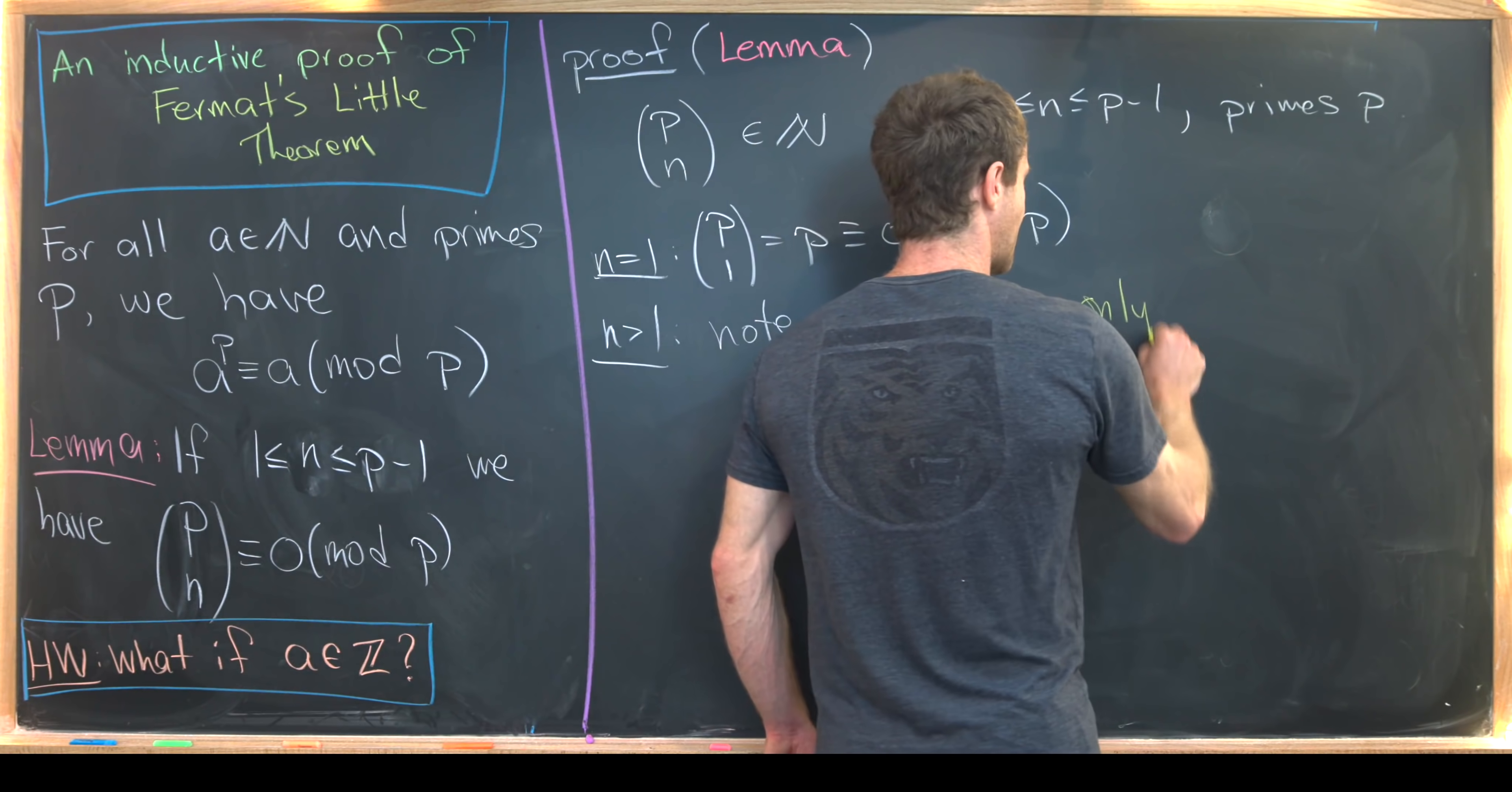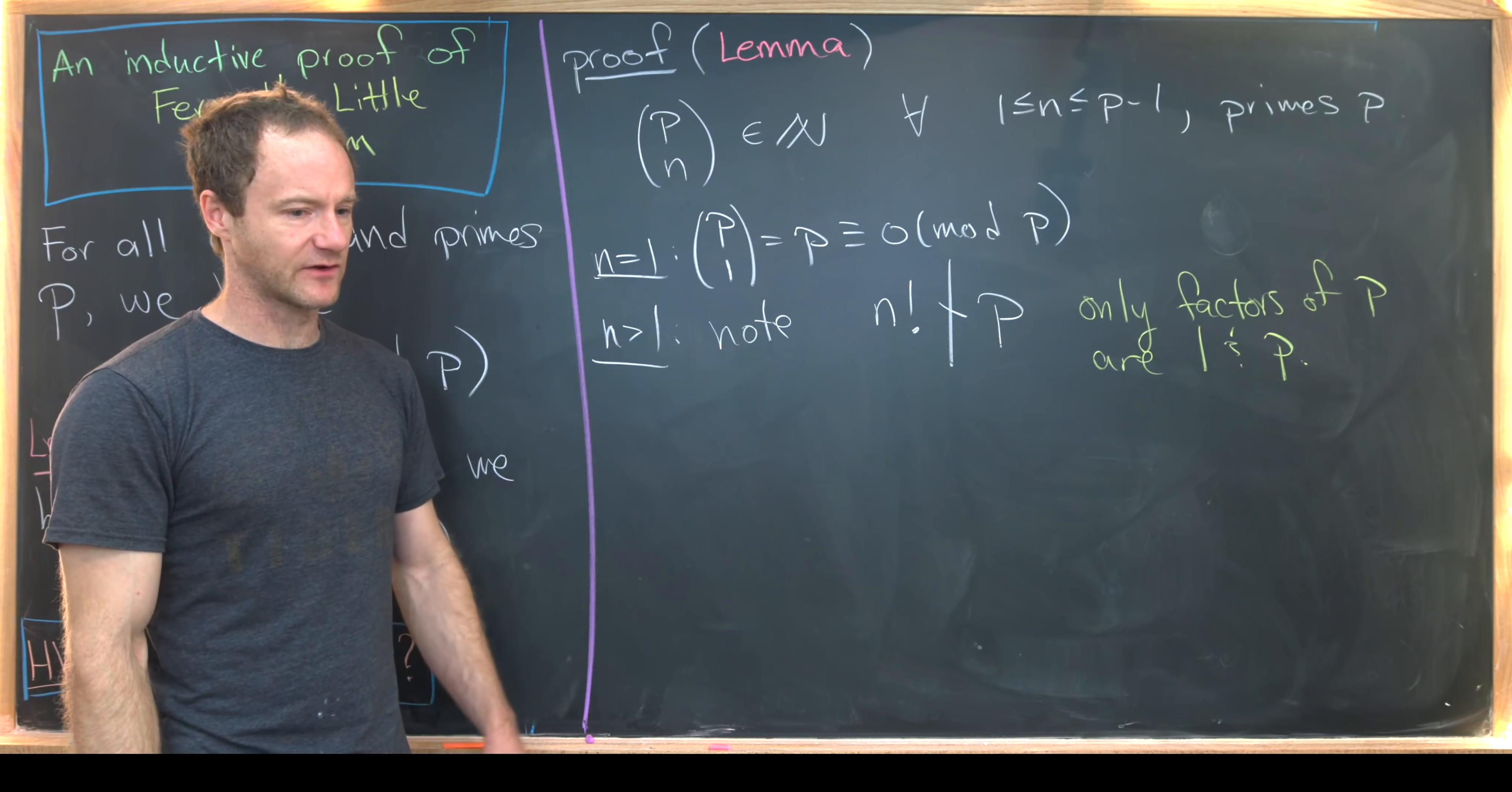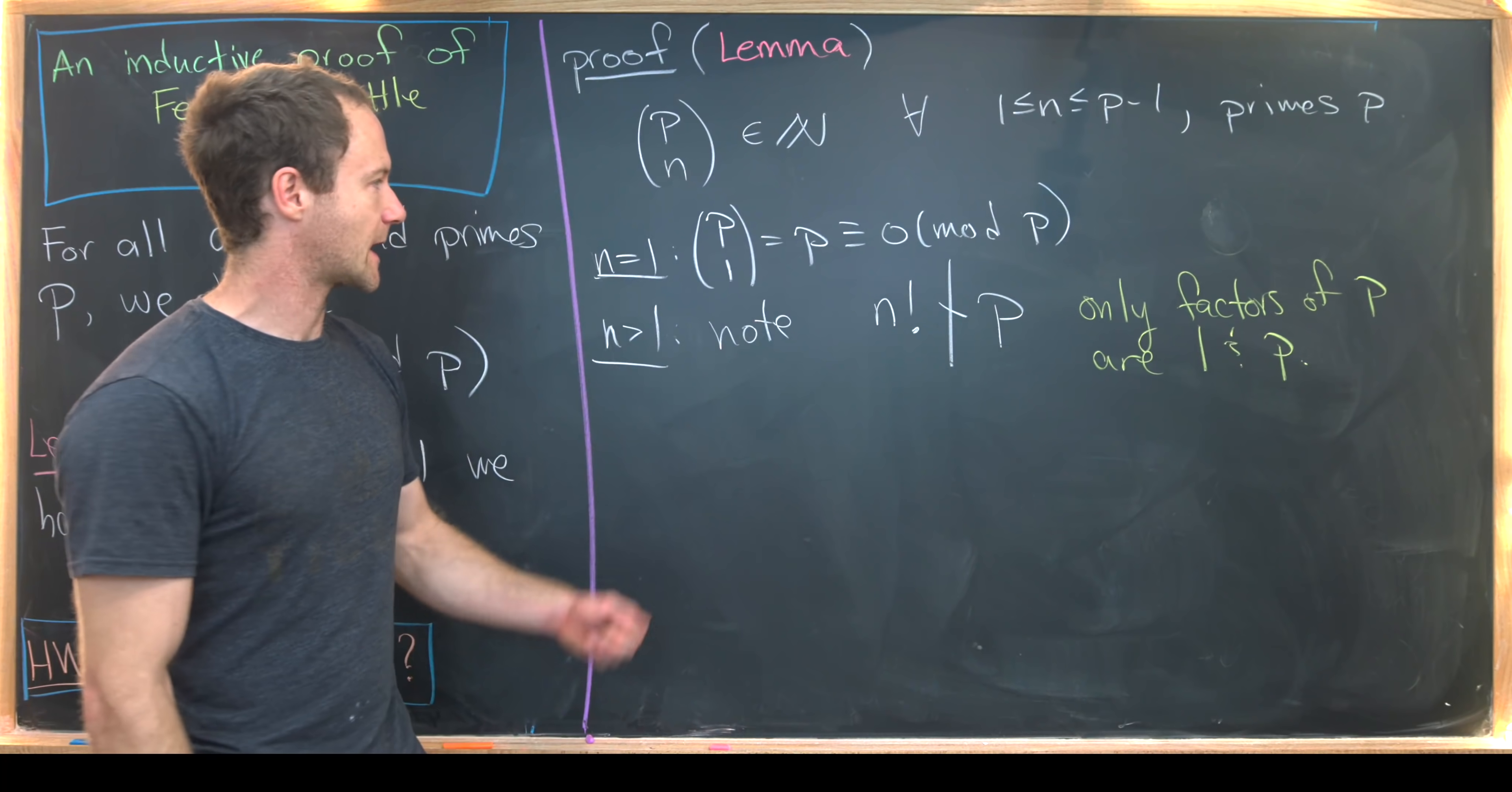The only factors of P are 1 and P. That's exactly the definition of a prime. But N factorial is the product of everything between 1 and N, but N is less than P. So since N is less than P, you never achieve that other factor of P, that being itself.